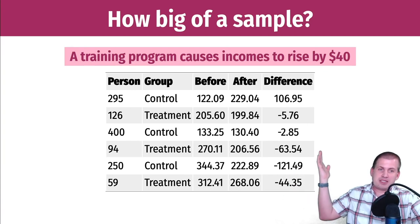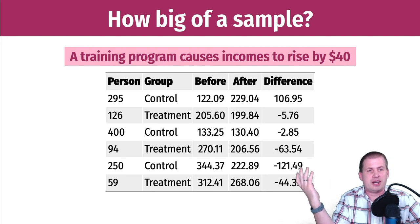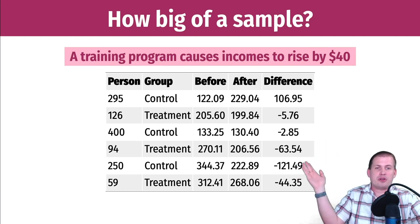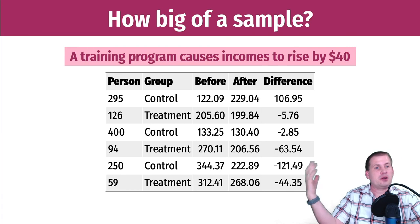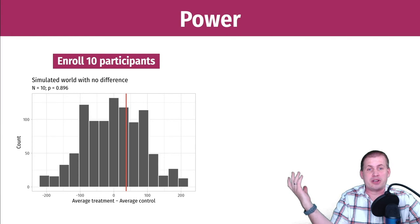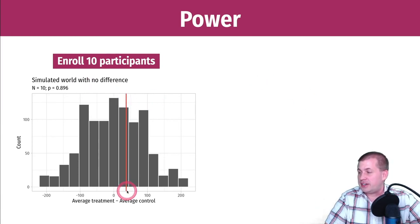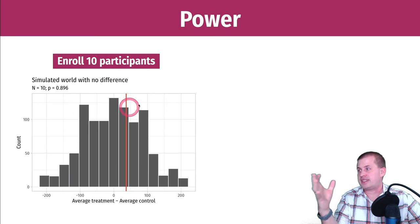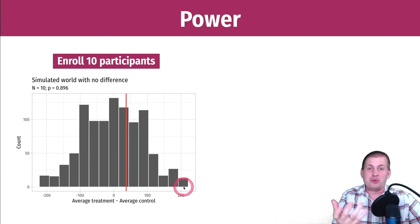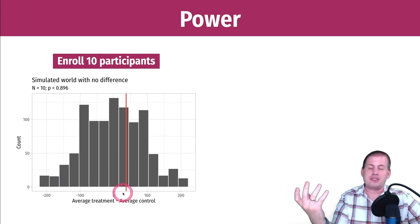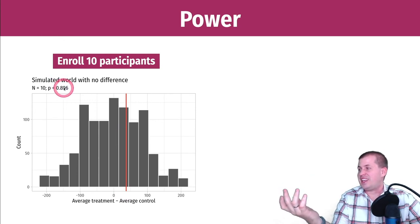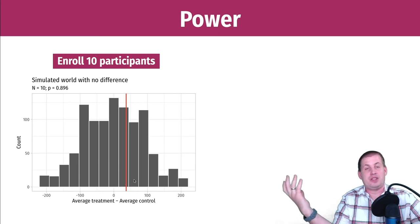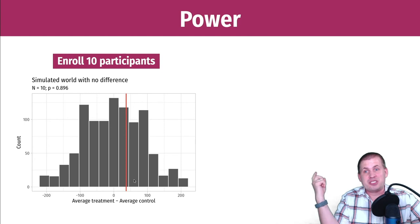This is the same example we saw last session. Let's say there's some training program that causes your income to rise by $40. We can measure people before and after; we have a treatment group and a control group — randomly assigned. If we only have like 10 people in the program, we'll measure a difference — that red line there, about $40 increase in income. But because we don't have many people in the study, if we shuffle all the numbers and simulate a world where there is no difference between treatment and control groups 10,000 times, we could see differences up to $200 or as low as negative $200. Seeing $40 in that hypothetical null world is completely normal — there's an 89% chance of seeing a $40 difference. That's only because we chose a very small sample size.